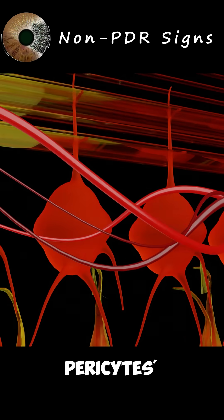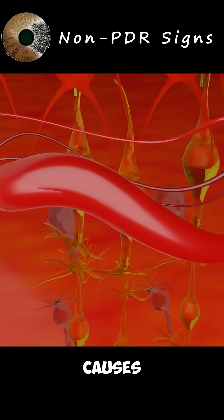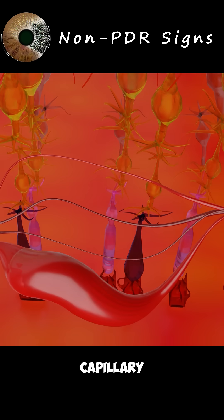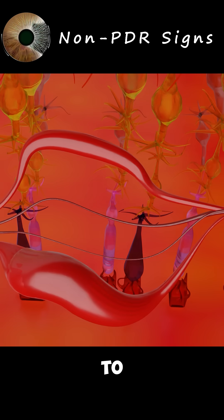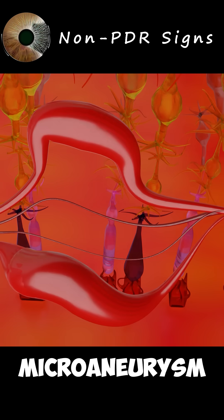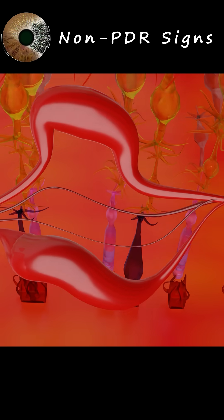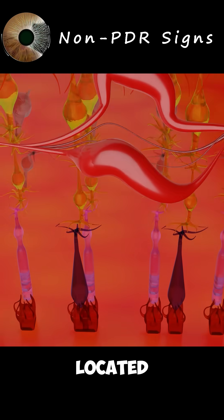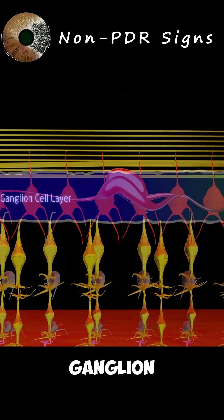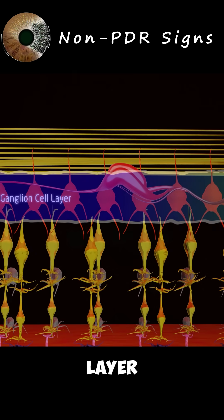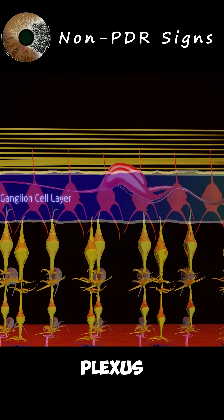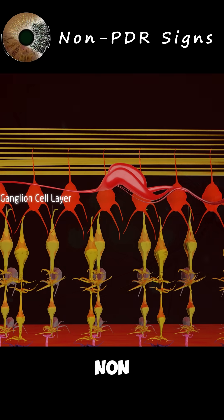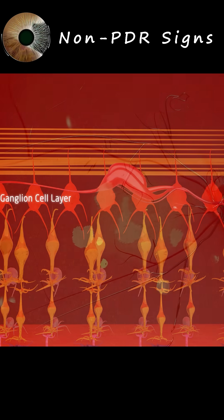Pericyte absence causes a focal dilation in the capillary or looping to form microaneurysms. Microaneurysms are located in the ganglion cell layer, in the inner capillary plexus adjacent to areas of capillary non-perfusion.